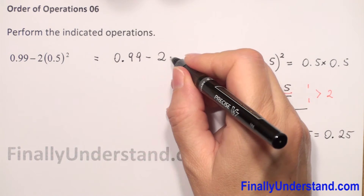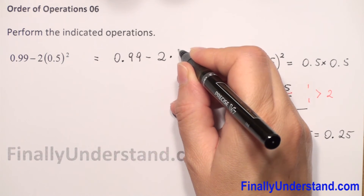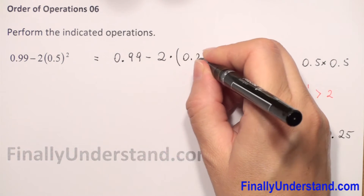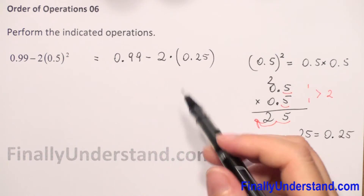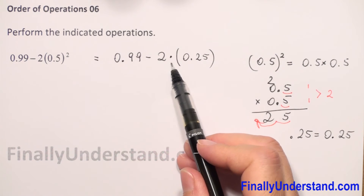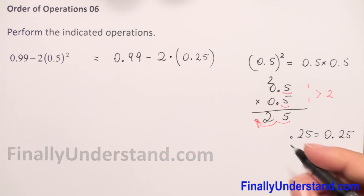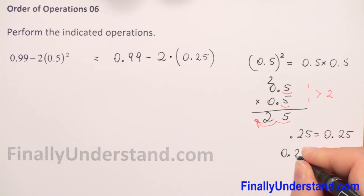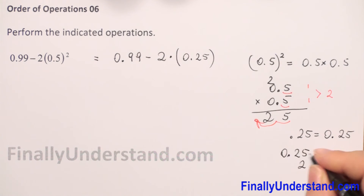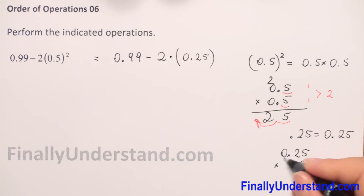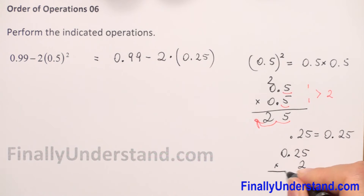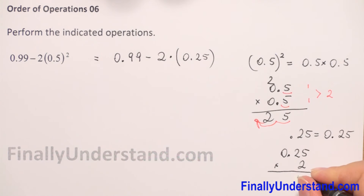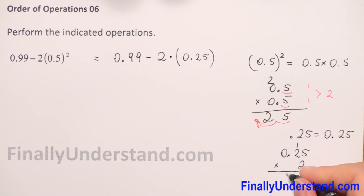So we now have 2 times 0.25. We have subtraction and multiplication, so first we do the multiplication. We write 0.25 on top since it has more digits, and multiply by 2. 2 times 5 is 10, so we write 0 and carry 1. 2 times 2 is 4 plus 1 is 5.